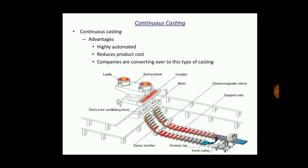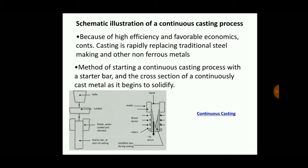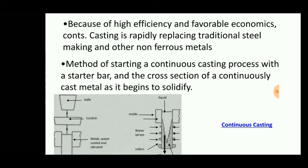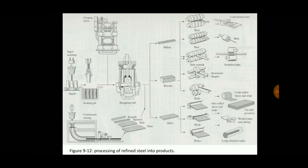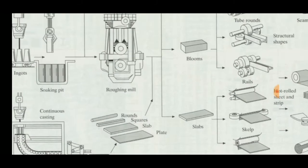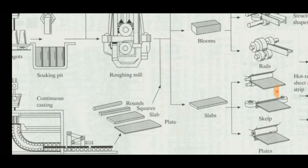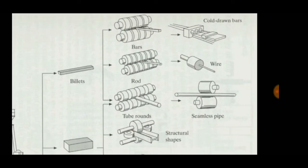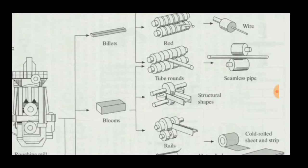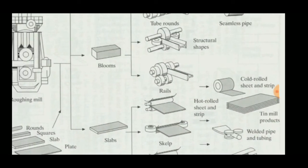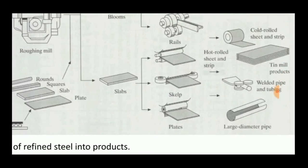Due to high efficiency and favorable economics, continuous casting is replacing traditional steel making and other non-ferrous metal methods, which are costly and time-consuming. After pieces are cut into rounds, squares, slabs, or plates, this process is used for making cold round bars, rods, wires, tubes, seamless pipes, structural shapes, sheets, rolls, hollow pipes, and plates.